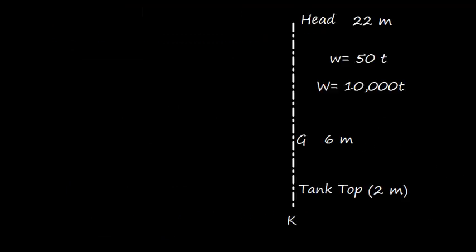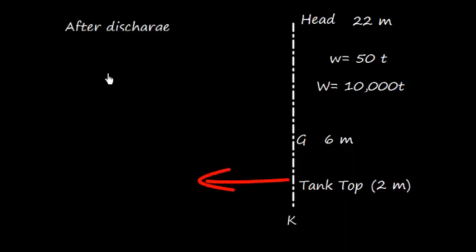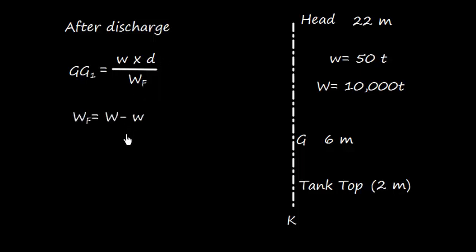So once the weight is discharged, actually weight is discharged from tank top, that is 2 meters from keel. So we can easily work out that after discharge, my GG1, again I'll use the same formula: GG1 is equal to W into D divided by WF, where WF is final. So let us work out what is WF.